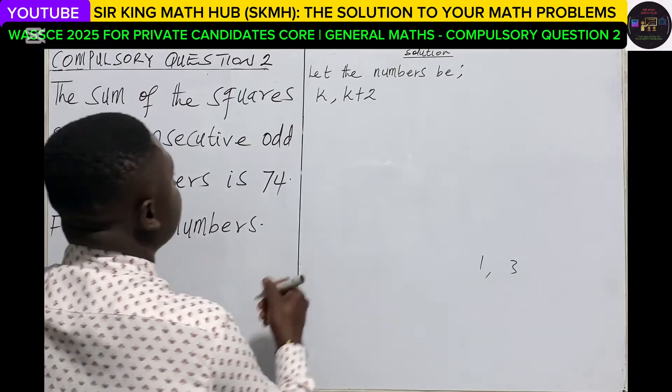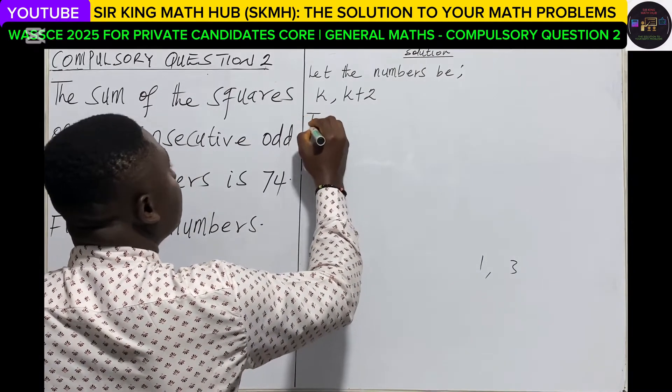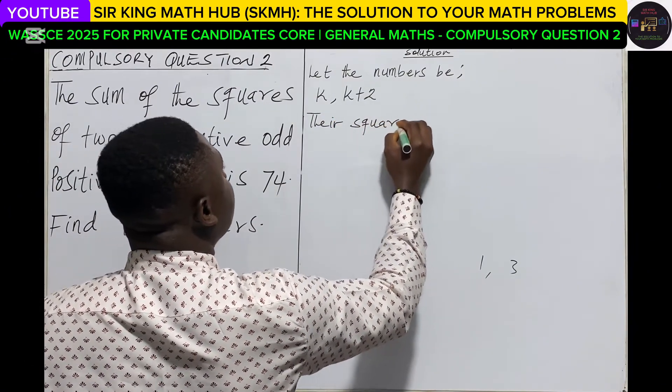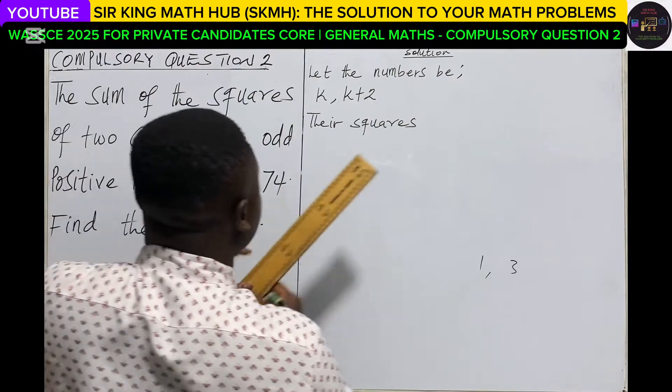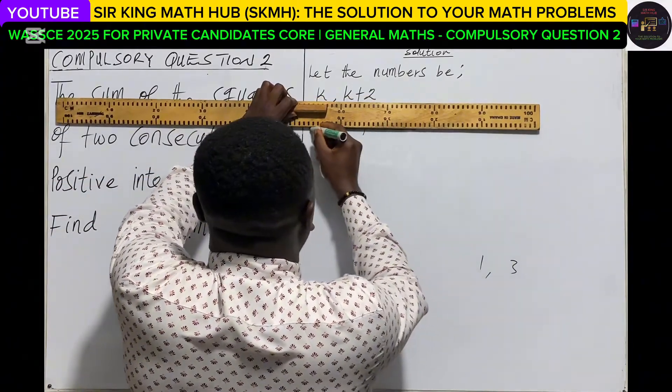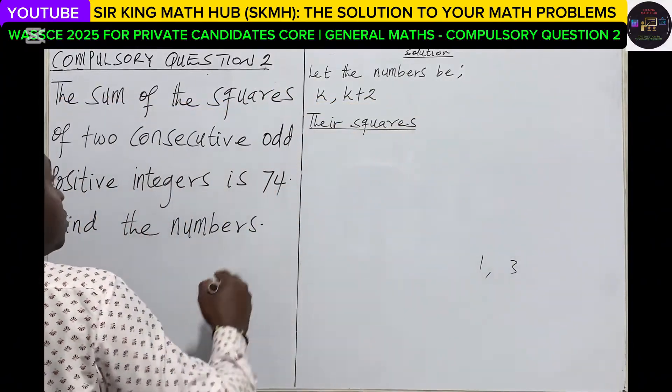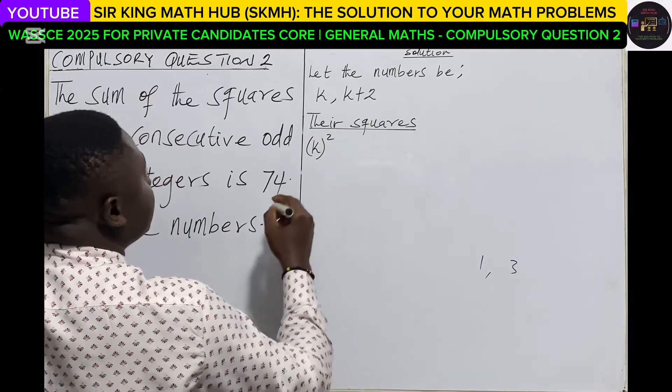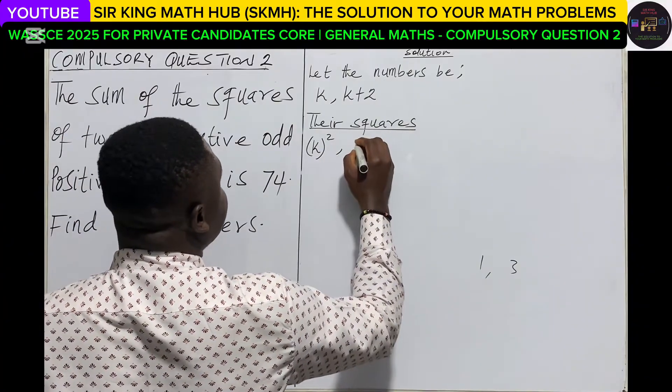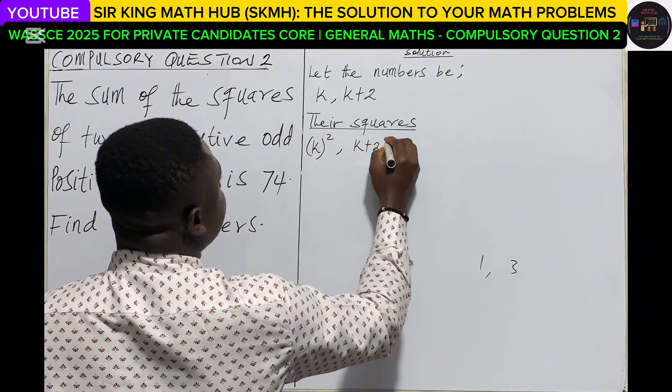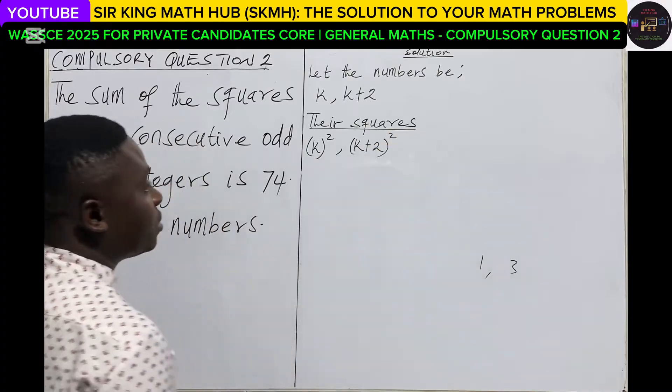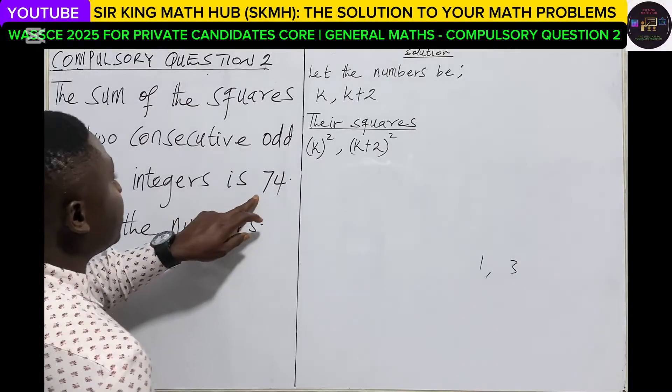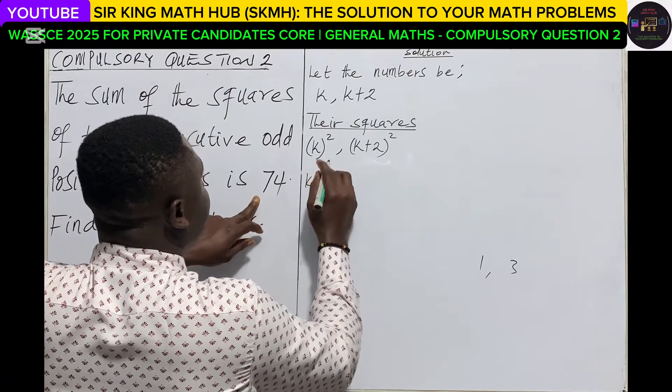Now again we're told that the sum of the squares. So let's look at the squares, let's write an expression of their squares. So the first positive odd number we are going to square it, then the second consecutive odd number we are going to square it. Now we are told that the sum of their squares is equal to 74.